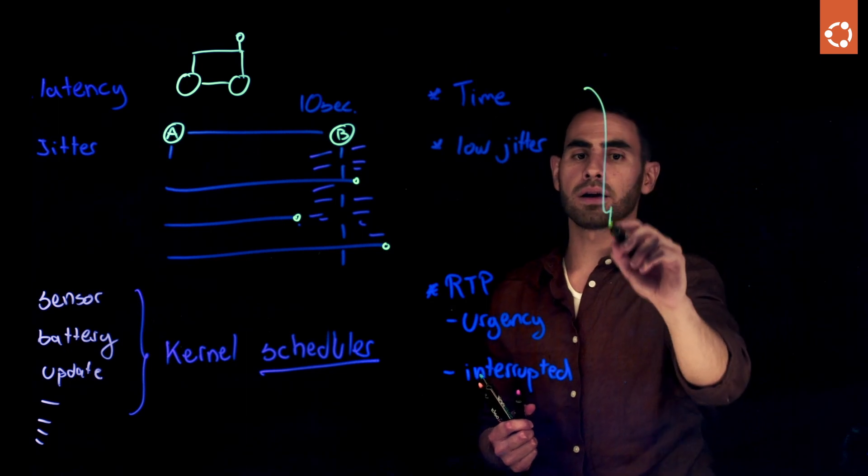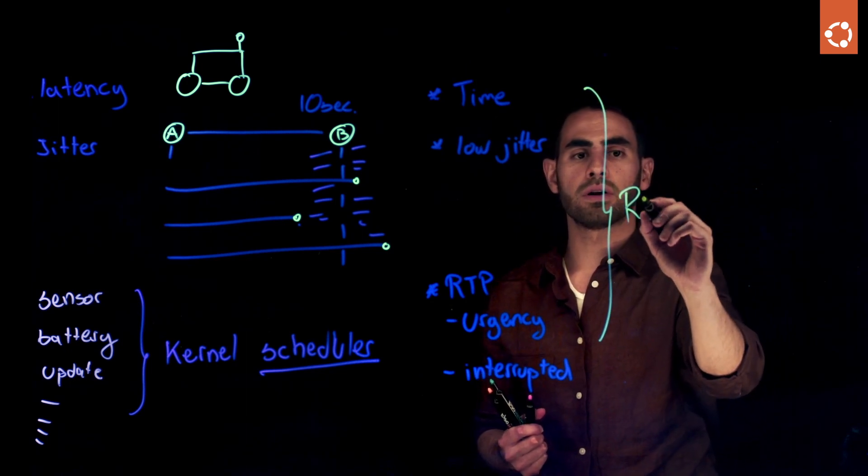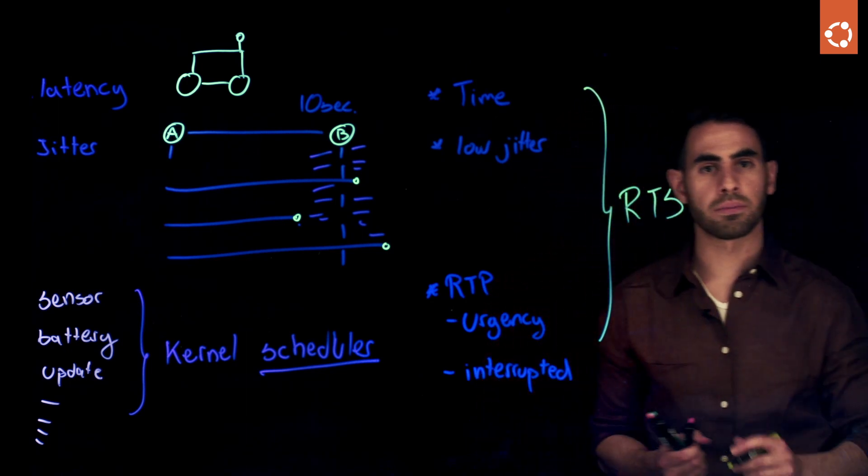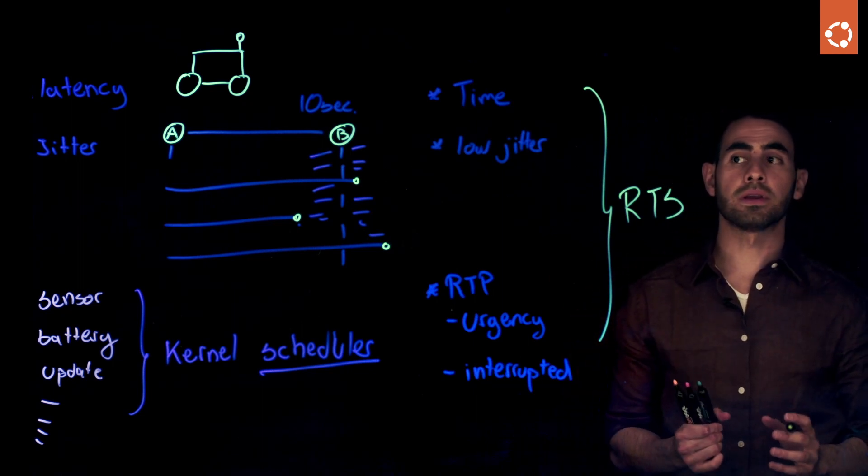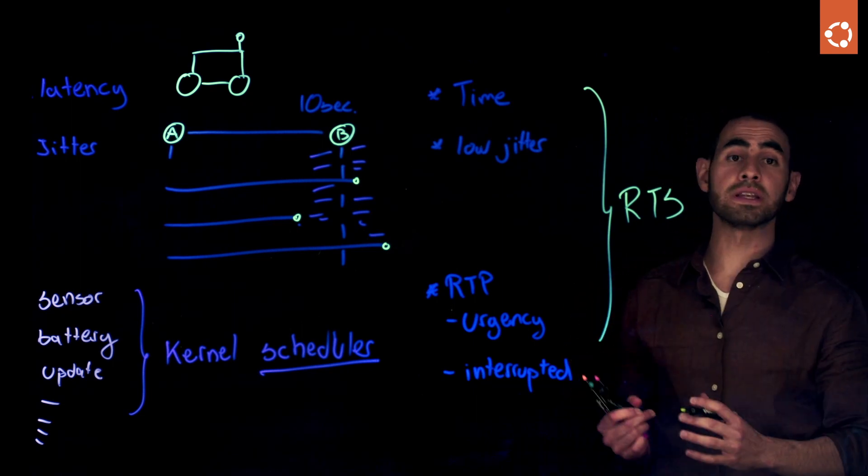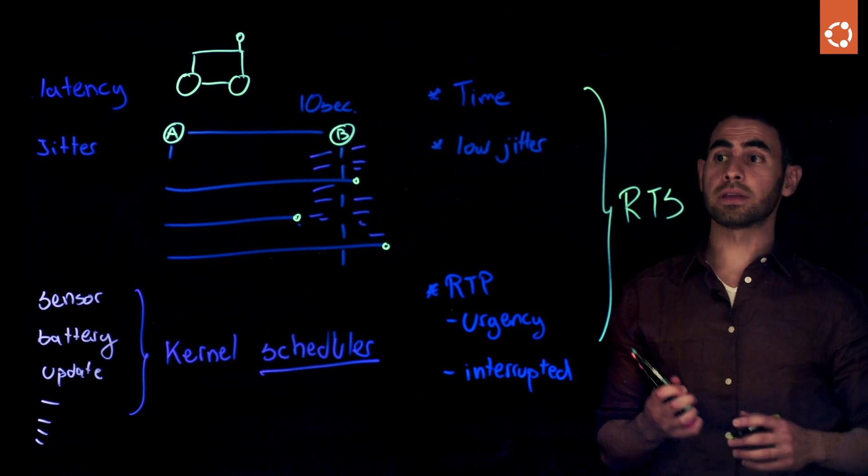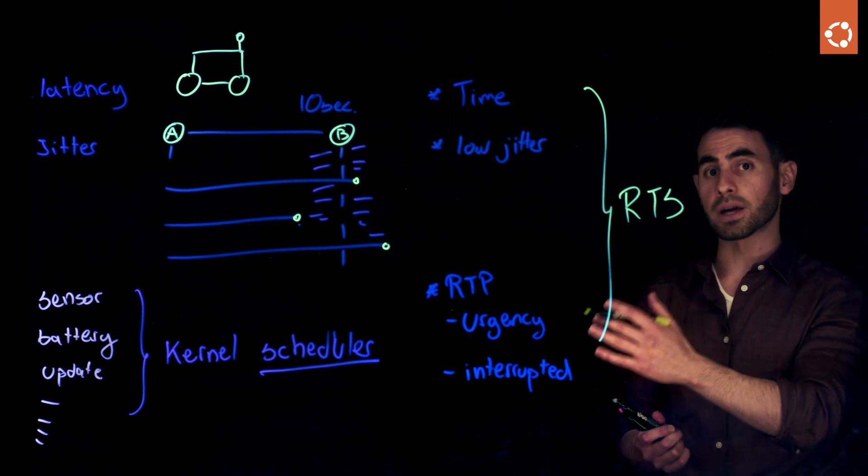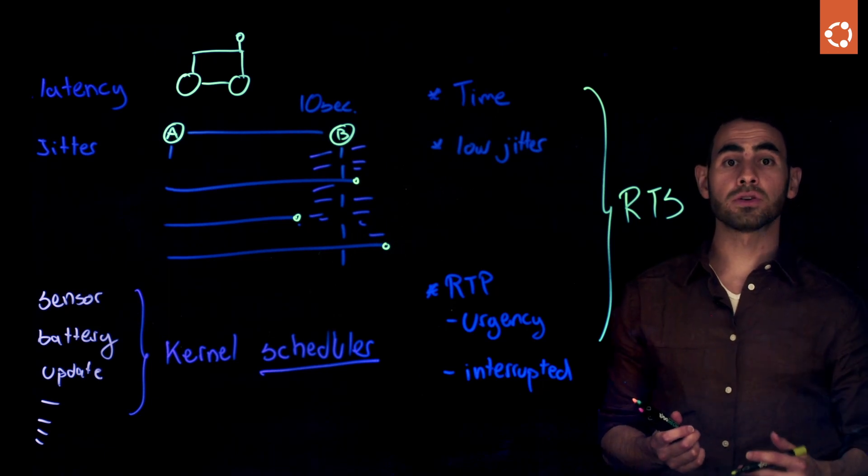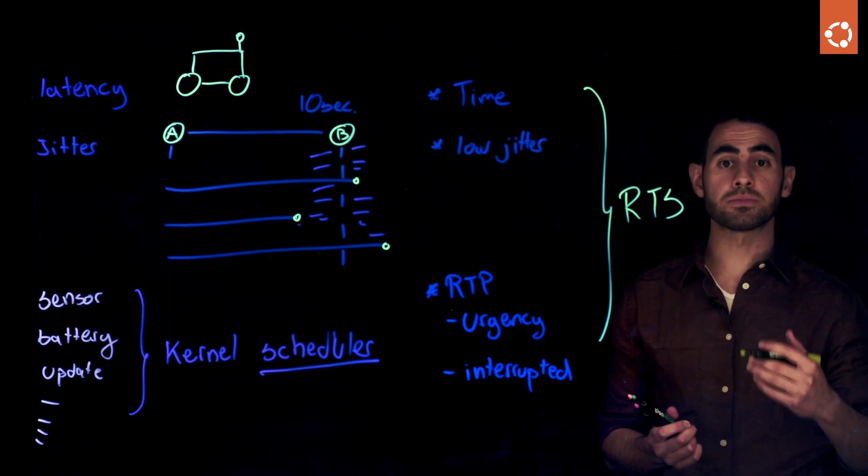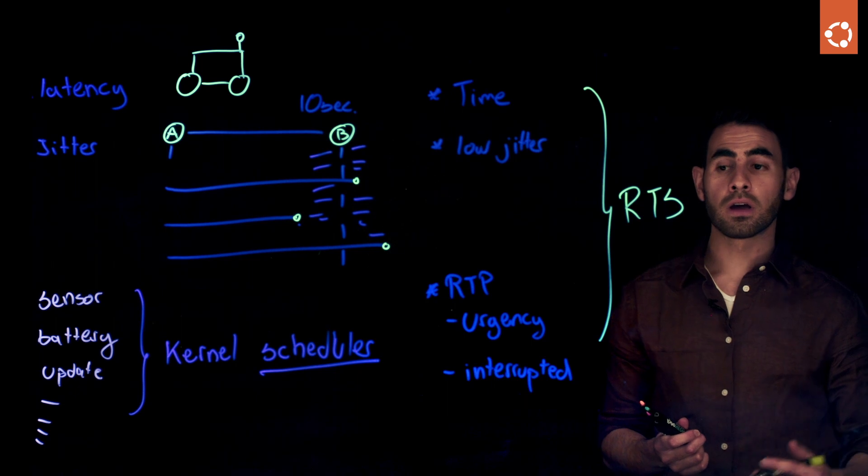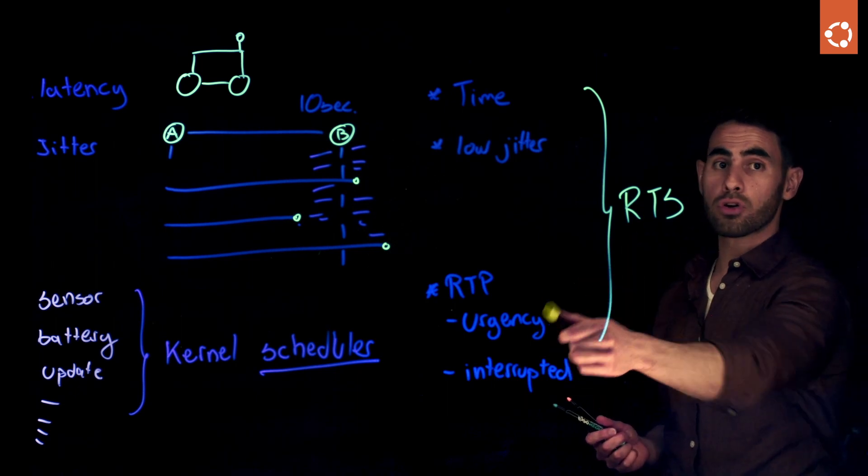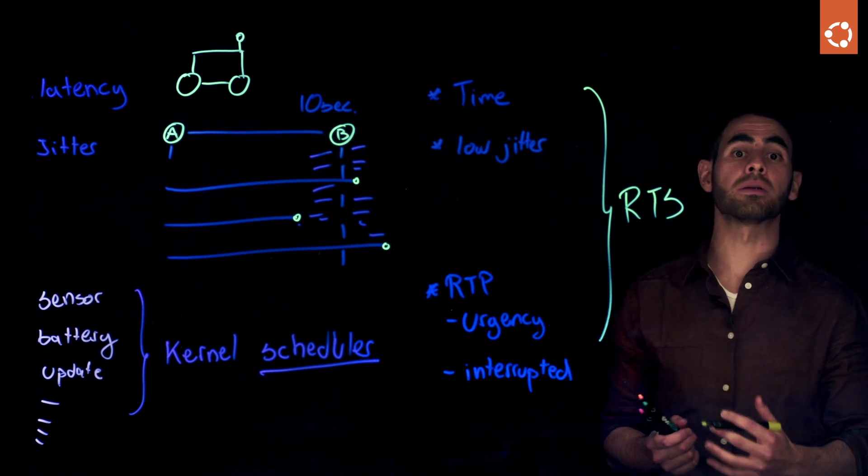These are the main characteristics of a real-time system. Running activities, some of them, with a deterministic latency that the success depends not only on whether it completes the activity, but also if it does it on the specified time. Activities that we have some urgency and cannot be interrupted by others.